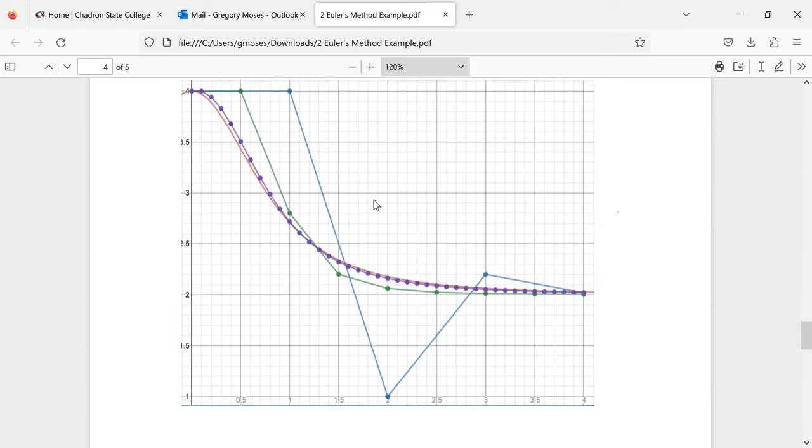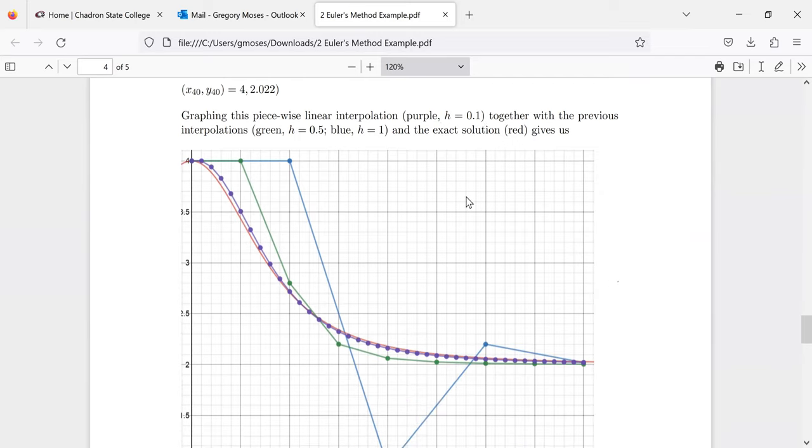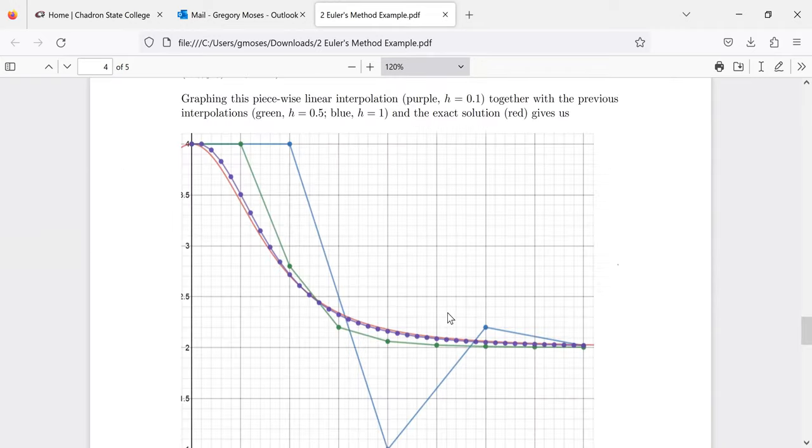And then, this picture is getting kind of crowded. But if we let h be 0.1, this is now a very good approximation. 0.1 is following the curve extremely nicely. So, in general, letting h be smaller will reduce the error and make Euler's method more accurate.